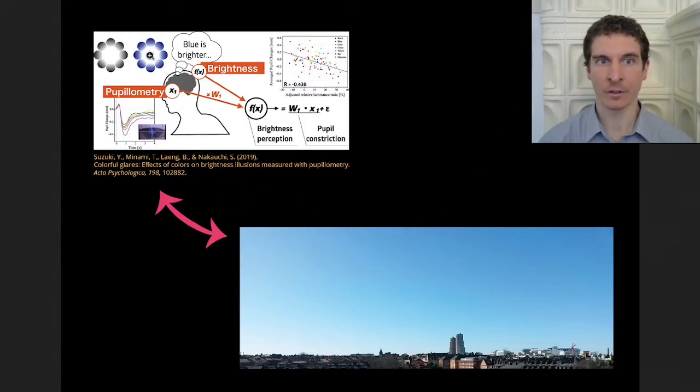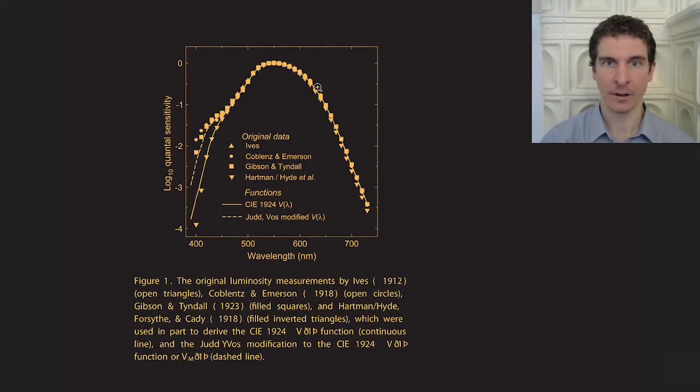Brightness is perceived differently from a small glare source than in general, more naturalistic settings. The luminosity function was designed for the latter, so it's a general tool to estimate perceived brightness based on spectral composition.